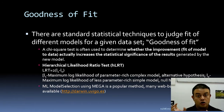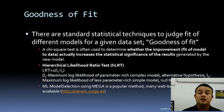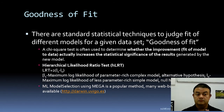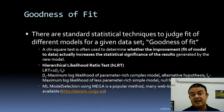Goodness of fit is a key concept — how good is the fit between model and data? There are standard statistical techniques to judge the fit of different models for a given dataset, called goodness-of-fit tests. One simple test is the chi-square test of goodness of fit. Another test is called the Hierarchical Likelihood Ratio Test (hLRT), which is very commonly used in a software called PAUP.